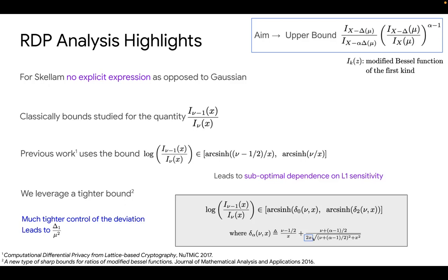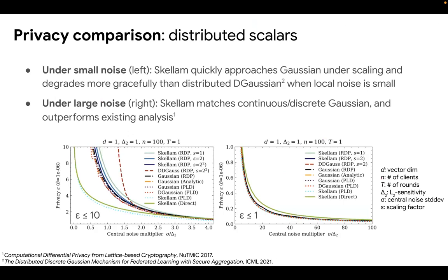To see this in action, let's compare Skellam against several mechanisms in the distributed scalar case. Here we plot the privacy epsilon against the central noise multiplier. On the left, we have relatively small noise. The x-axis is the central noise multiplier, which is the ratio between the standard deviation and the sensitivity. We can see that Skellam approaches Gaussian under the effect of scaling and degrades more gracefully than the distributed discrete Gaussian when the local noise is small. Notice that we have a target central noise standard deviation, but we are adding noise locally on N equals 100 clients, so you have to split the noise into local shares, and this is what contributes to the distributed discrete Gaussian divergence.